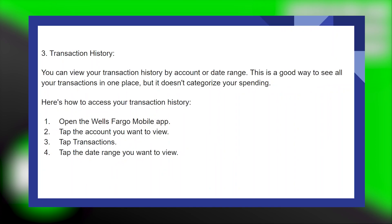The third option is Transaction History. You can view your transaction history by account or date range. This is a good way to see all your transactions in one place, but it doesn't categorize your spending.